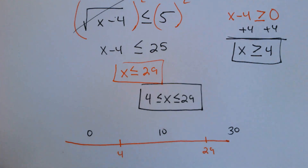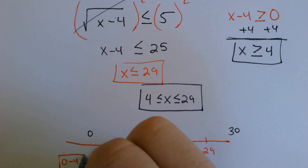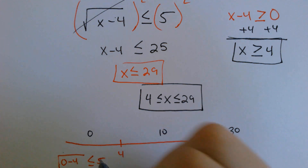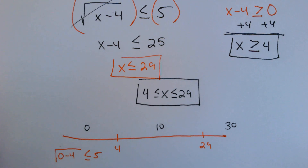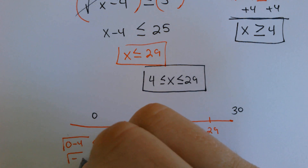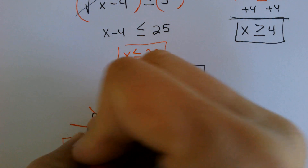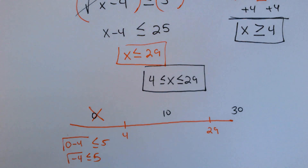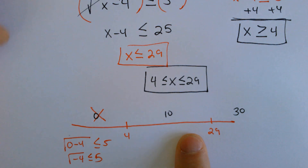Let's plug in 0. What is the square root of 0 minus 4? Is that less than or equal to 5? Well, the square root of 0 minus 4 is the square root of negative 4. Negative 4 doesn't even square root. So that one doesn't work. We didn't expect it to work; we expected the one in between 4 and 29 to work.